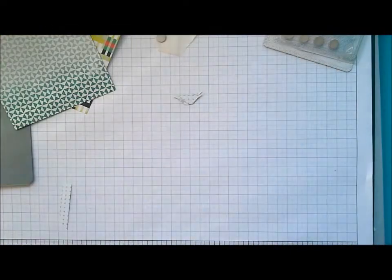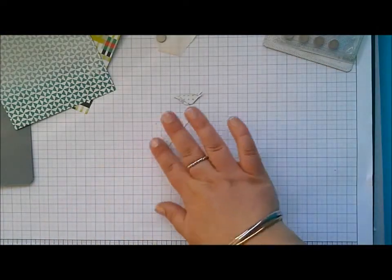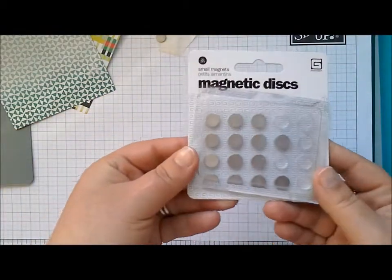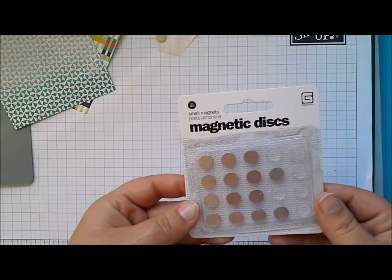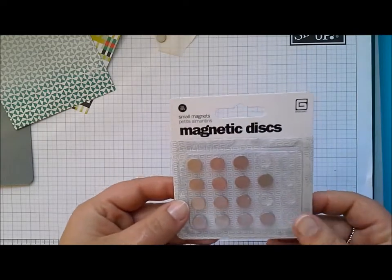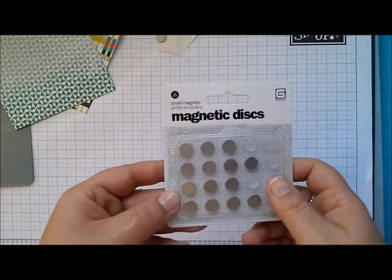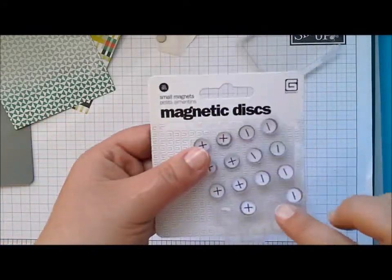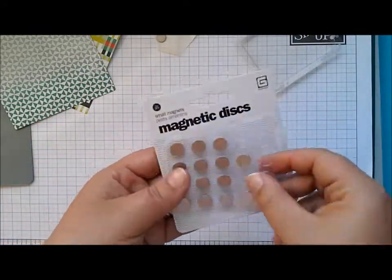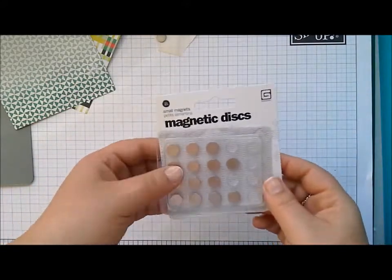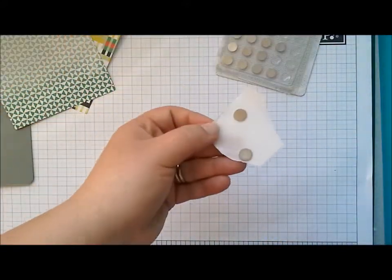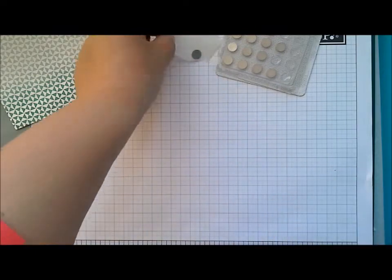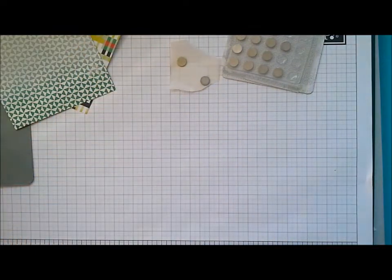Then we're going to add the magnetic snaps which is super simple. I've been using these little ones from Basic Grey. You get 20 pieces so that's 10 pairs, you can make 10 cards with this little set. They come with a positive and a negative so you just need one of each. They do have adhesive on the back. I sometimes find it's not quite strong enough so I use medium size glue dots to attach the card.